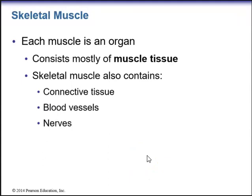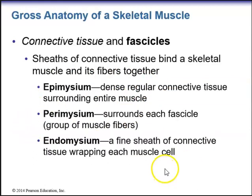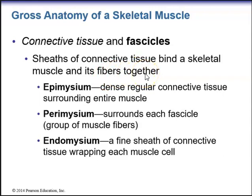With skeletal muscle, each muscle is an organ consisting mostly of muscle tissue, and also contains connective tissue, blood vessels, and nerves. Going over the gross anatomy of a skeletal muscle, it is made up of connective tissue and fascicles. Sheaths of connective tissue bind a skeletal muscle and its fibers together. The outermost sheath is known as the epimysium — dense regular connective tissue surrounding the entire muscle.